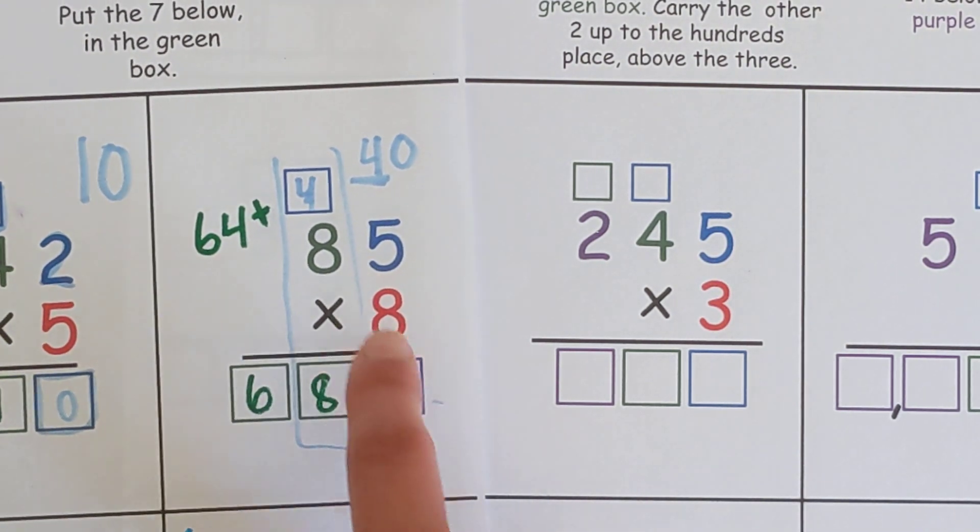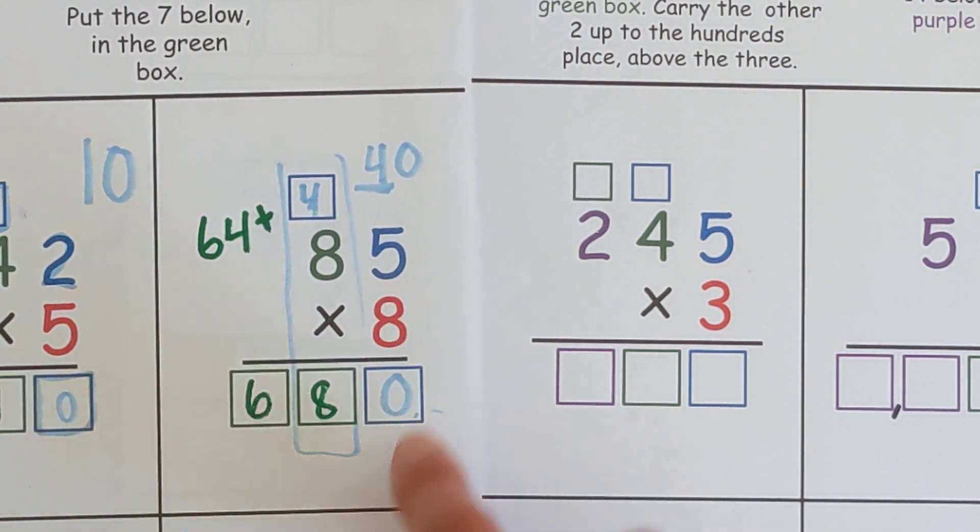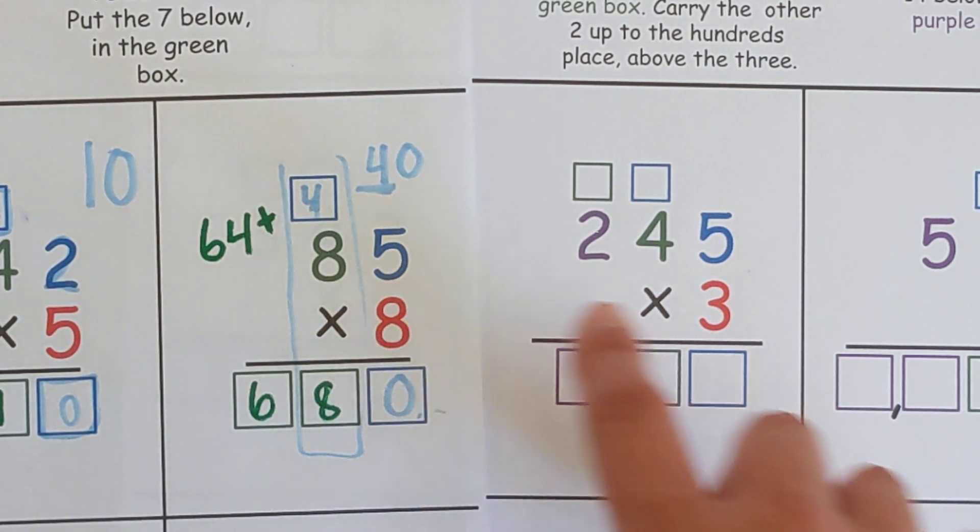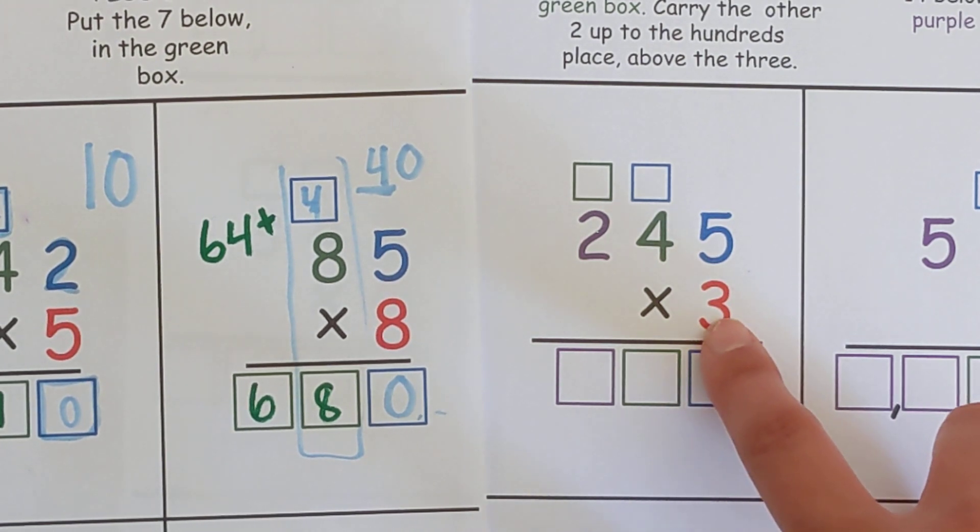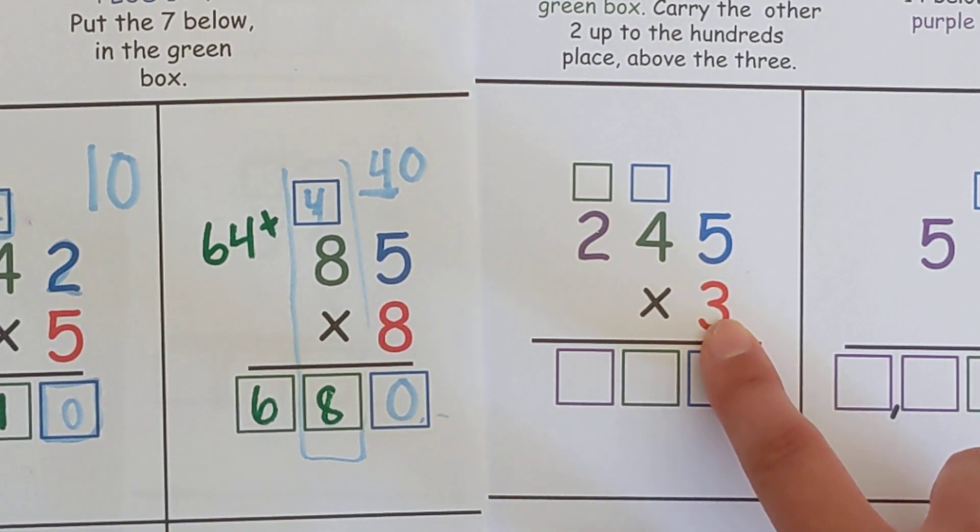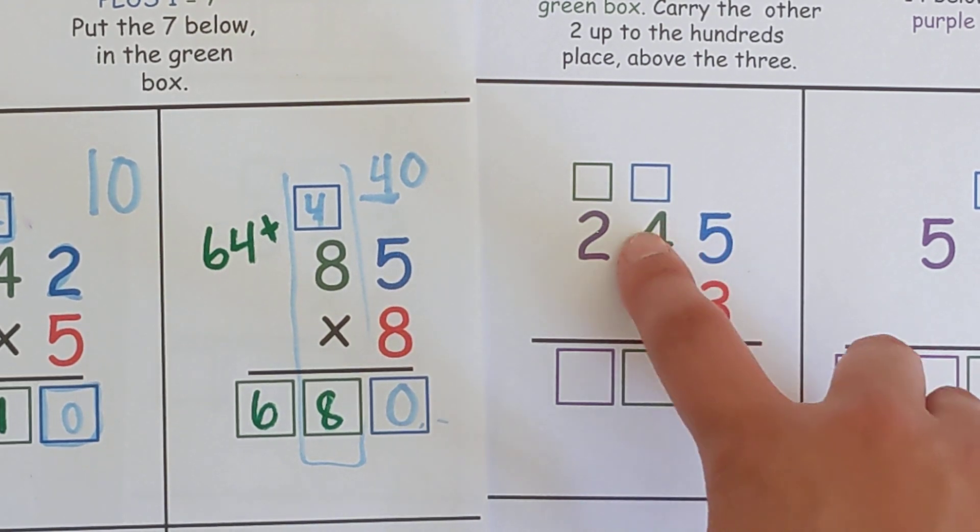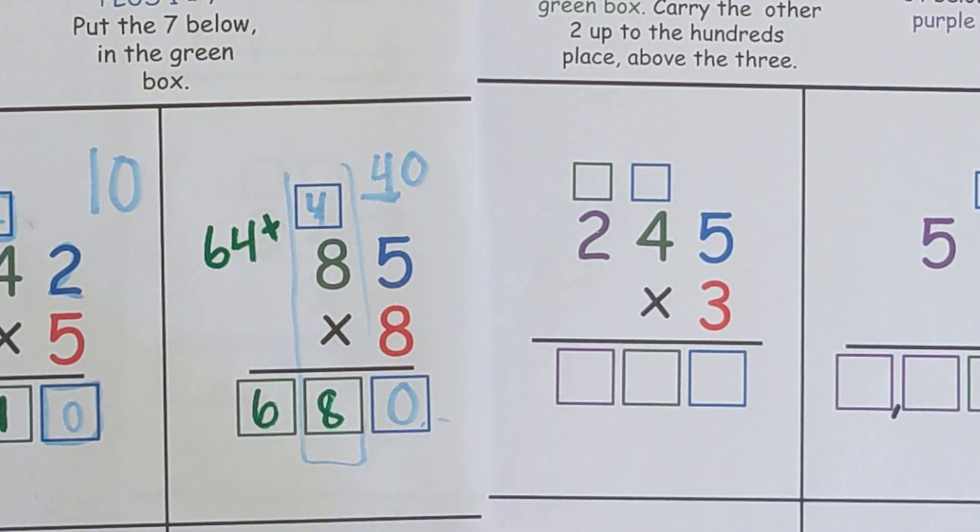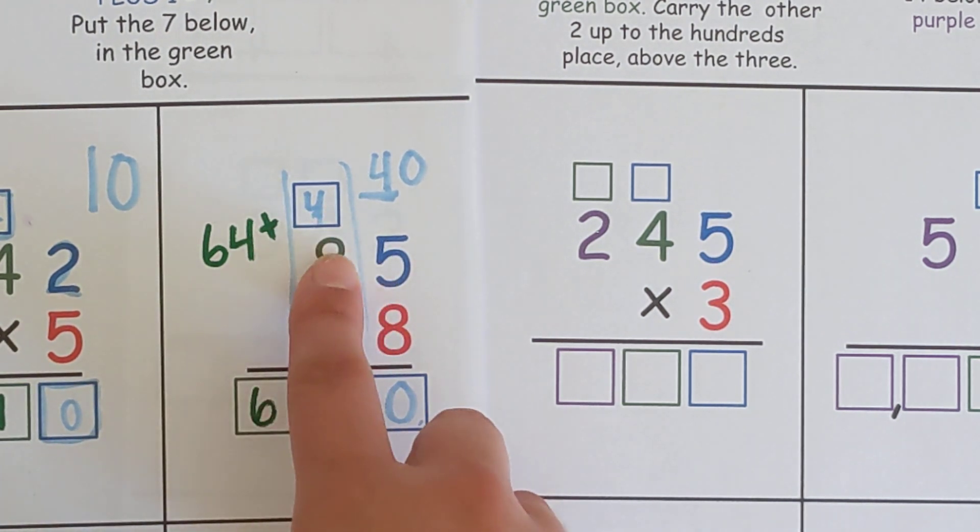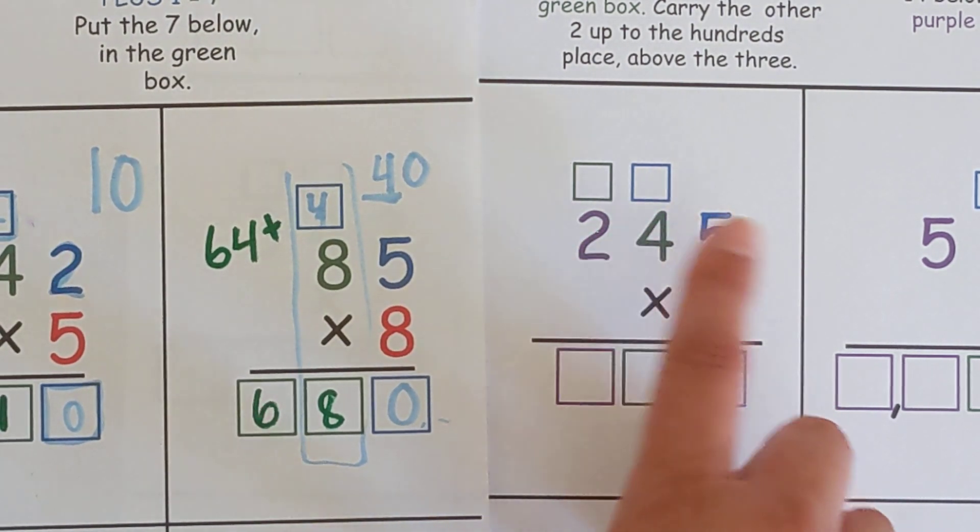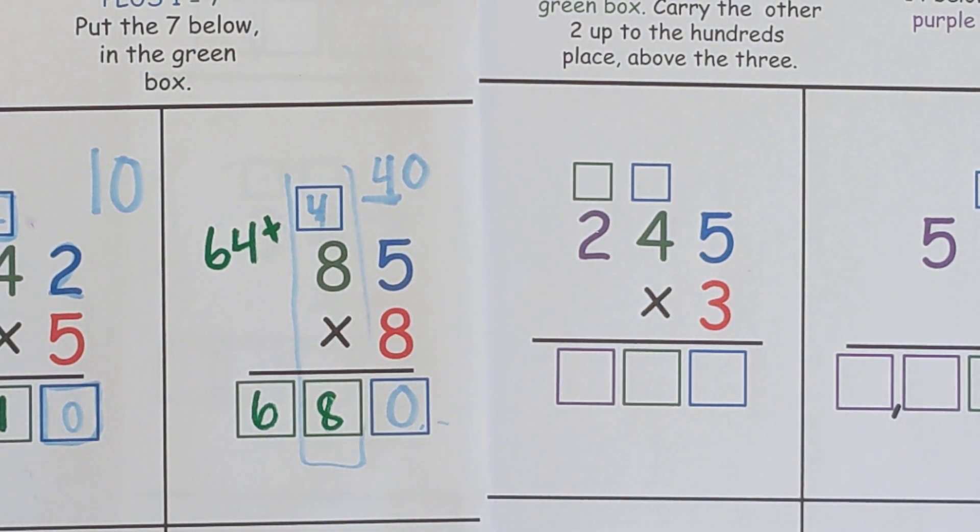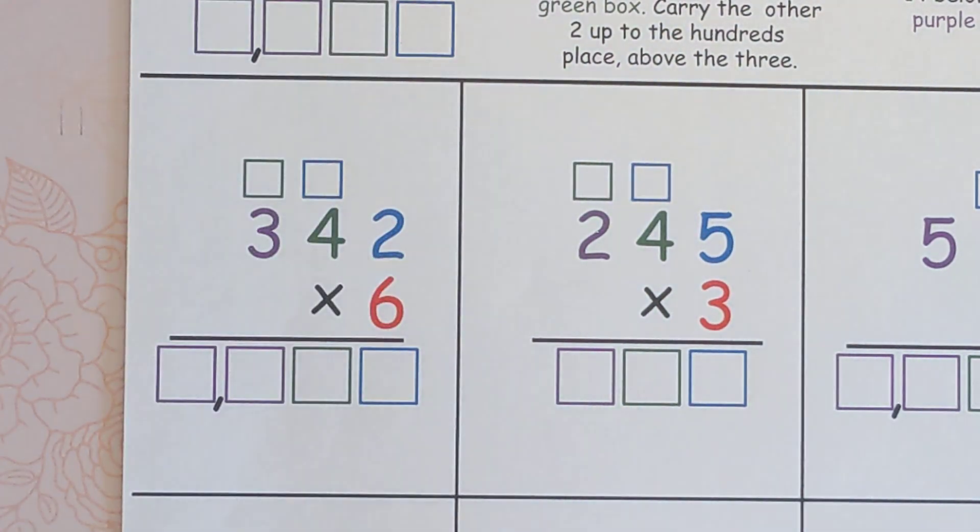So remember when we were learning two digits times one, how we would do eight times five and then eight times eight? Well, we're doing the same thing. We're just taking that red digit and going one at a time. We're going to do three times five, then we'll do three times four, and then we'll do three times two. That's it. It's actually the same steps as this one. You just go one more step or one more time. And all you have to remember is to carry if you get a double digit. These boxes up here will help remind you while you're learning. So let's go ahead and get started.